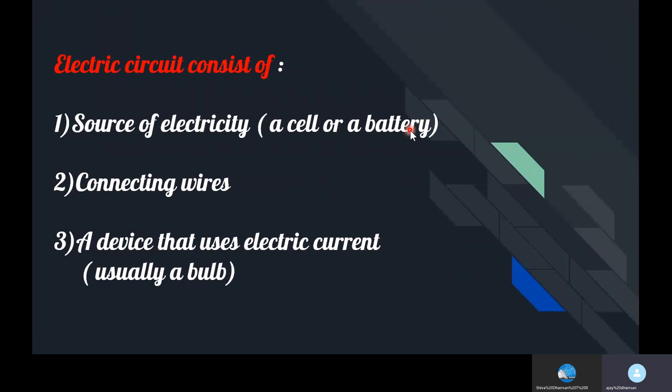We may wonder, can we use a wooden strip instead of connecting wires? Why are we not using it? It is because an electric wire is a conductor. Only conductors allow electricity to pass through them. A wooden strip is not a conductor, so it is an insulator and won't allow current to pass through.